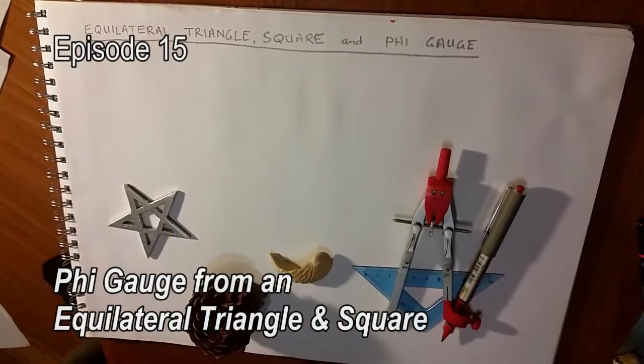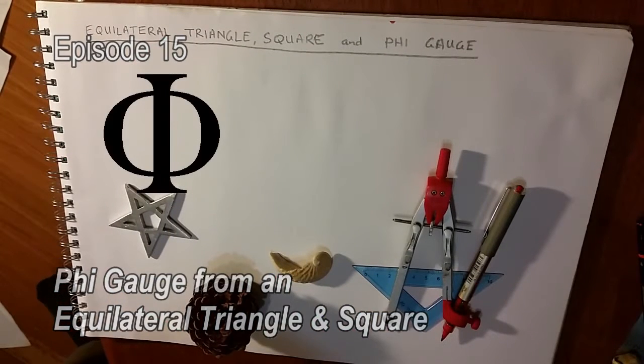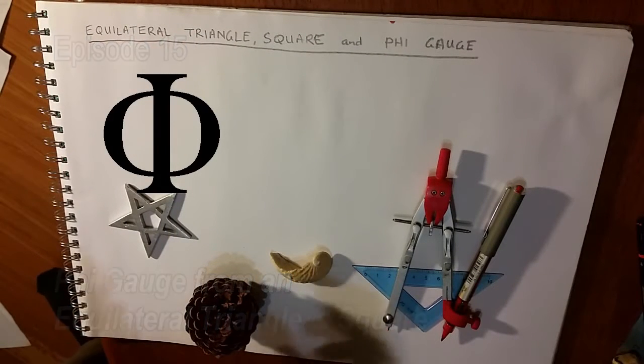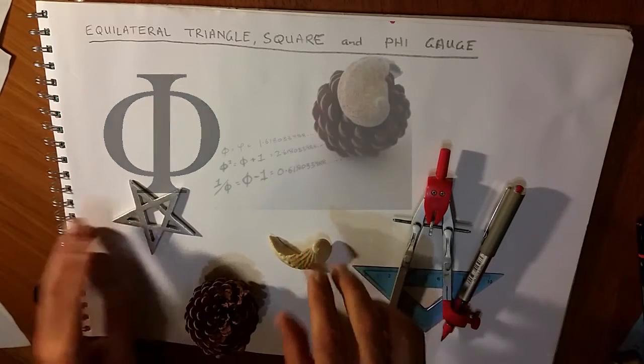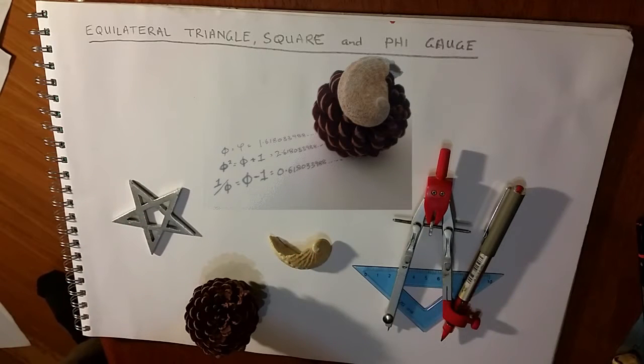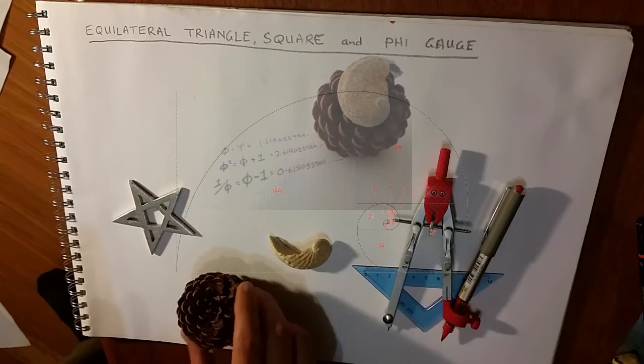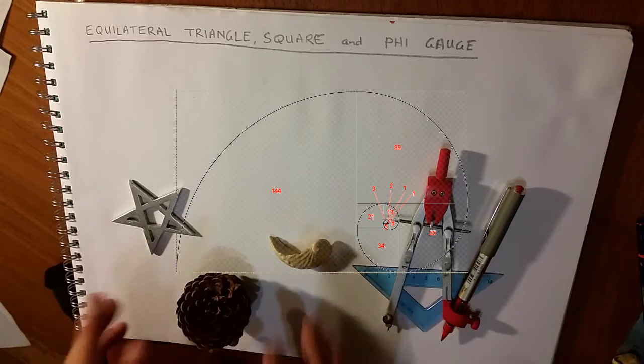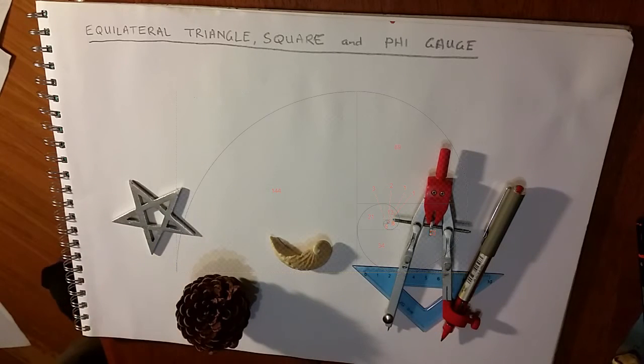So I'm going to create a phi gauge or a phi ruler. Phi being an amazing number visible in nature, in mathematics, but in geometry it also seems to be one of those fundamentals.